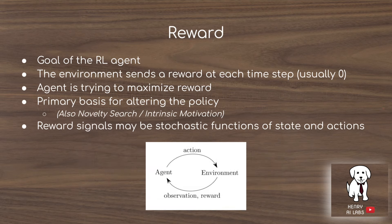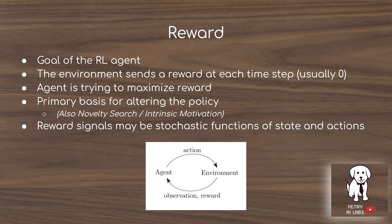In reinforcement learning, the reward is the signal for the agent to make changes to its policy and try to maximize this numerical reward signal. At each time step, the agent sends an action to the environment, and the environment sends back a new state and a reward. In some environments like cart pole balancing, the environment might send back a constant plus-one reward for keeping the pole upright and minus one when it tips over. But in other situations like chess, the reward is really sparse — usually zero at every time step until the end of the episode, where the agent gets plus one for winning or minus one for losing. Designing reward functions and dealing with stochastic reward signals is one of the key characteristics of reinforcement learning problems.